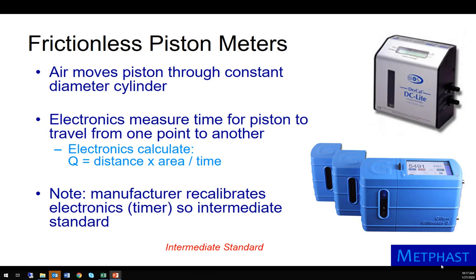In frictionless piston meters, air moves a piston through a constant diameter cylinder. The time for the piston to traverse the cylinder is measured electronically. The air flow rate is then calculated as the distance the piston traverses multiplied by the area of the cylinder divided by travel time. This device is an intermediate standard because the manufacturer recalibrates the electronics.